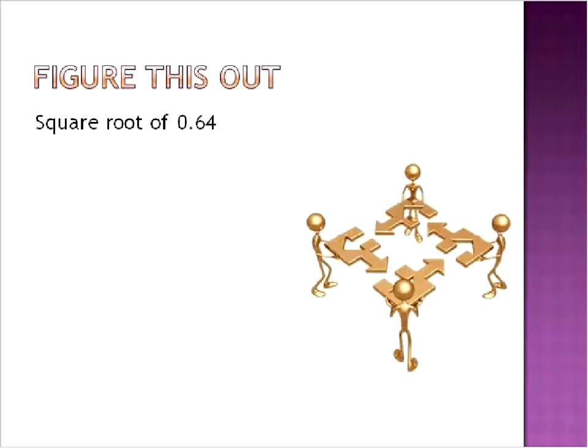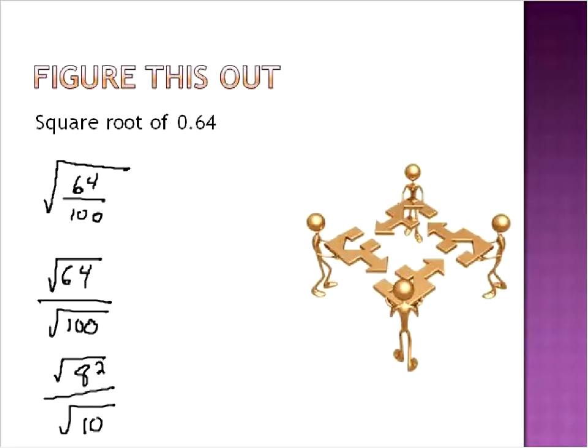And the next type of question is asking us to find the square root of a decimal. A decimal can be written as a fraction. And in this case, it would be 0.64 is the same as saying 64 over 100. That's the way that we would write this decimal as a fraction. Just like in the prior question, we can now take the square root of 64 and divide by the square root of 100. And 64 is equal to 8 squared. That's one of those numbers from the beginning.